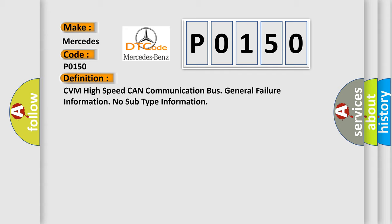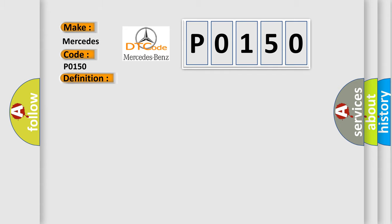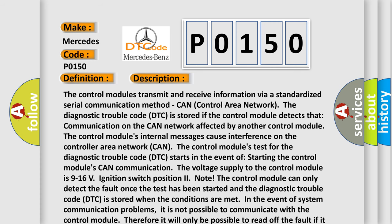And now this is a short description of this DTC code. The control modules transmit and receive information via a standardized serial communication method: CAN (Control Area Network). The Diagnostic Trouble Code (DTC) is stored if the control module detects that communication on the CAN network is affected by another control module. The control module's internal messages cause interference on the controller area network (CAN), and the control module's test for the diagnostic trouble code (DTC) starts in the event of starting the control module's CAN communication.